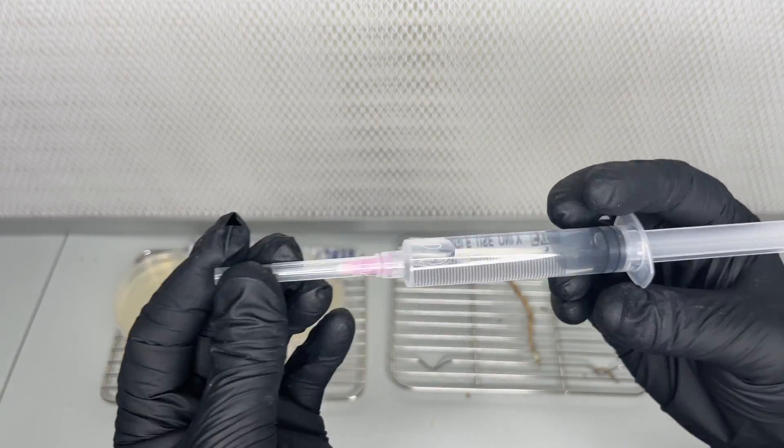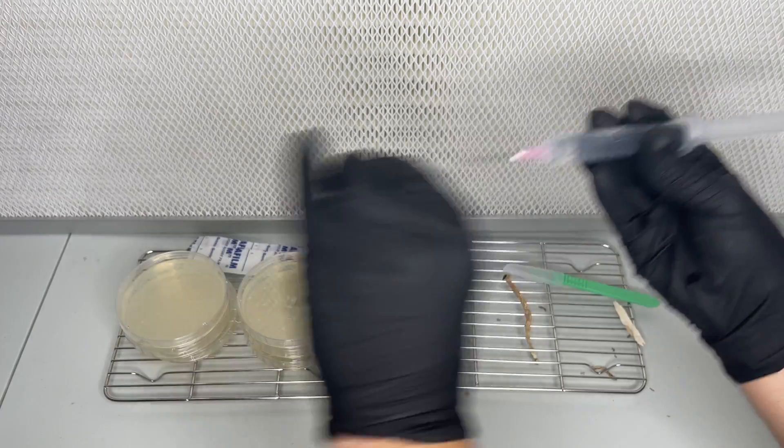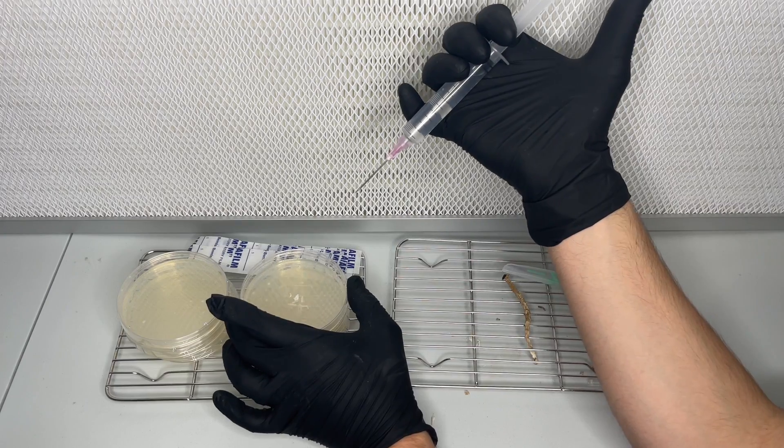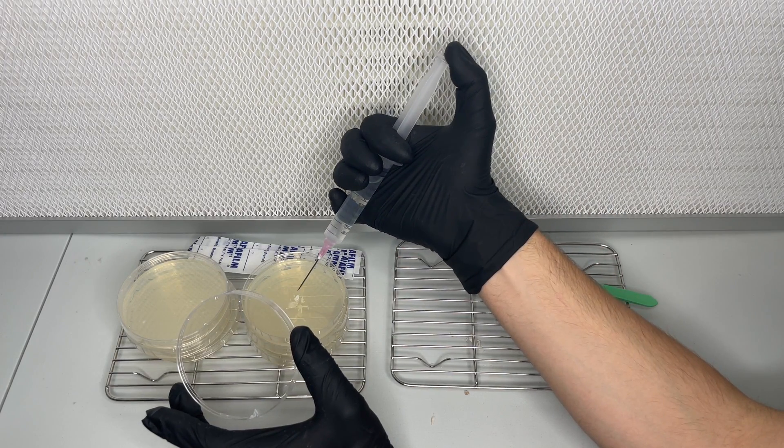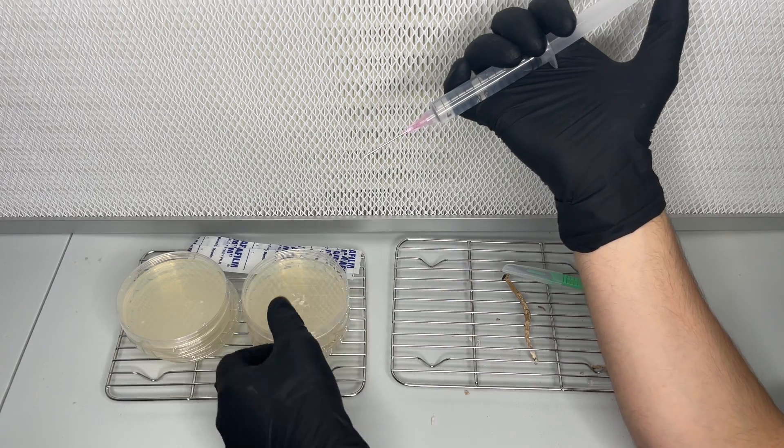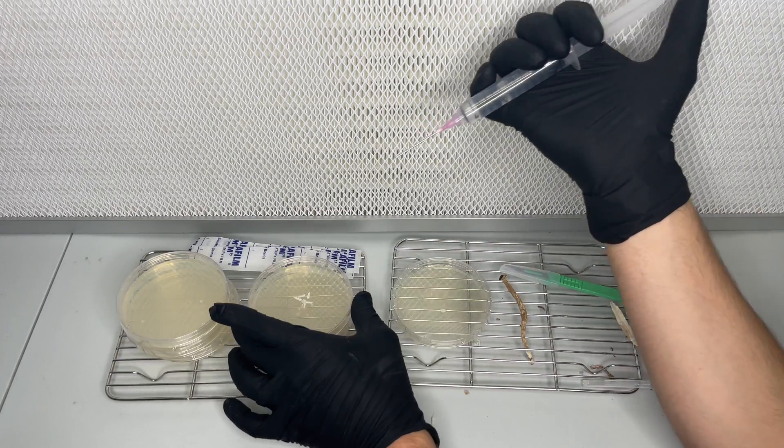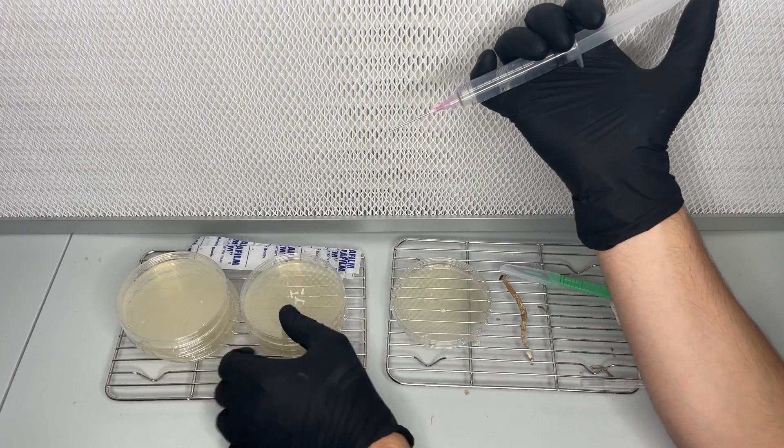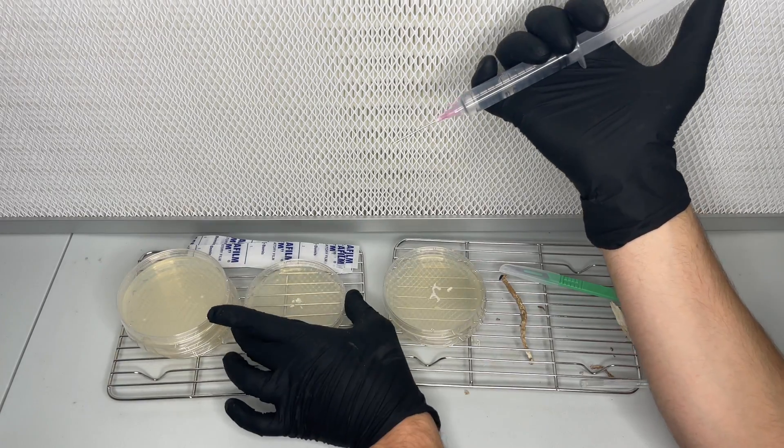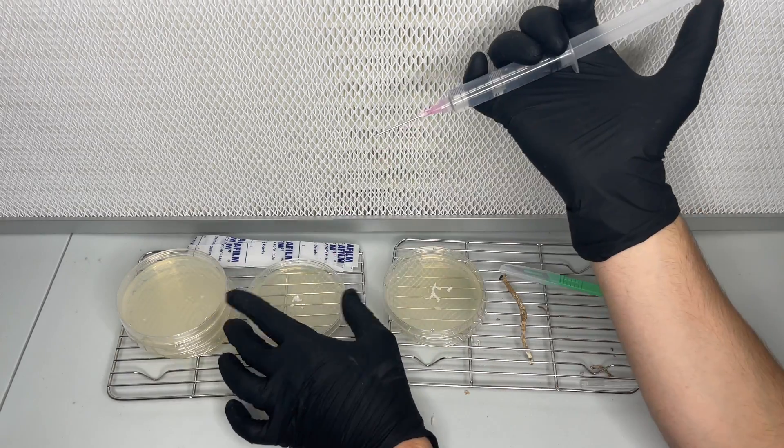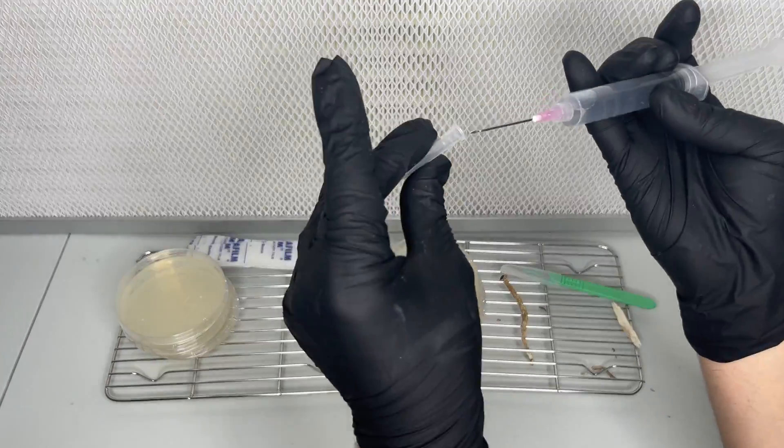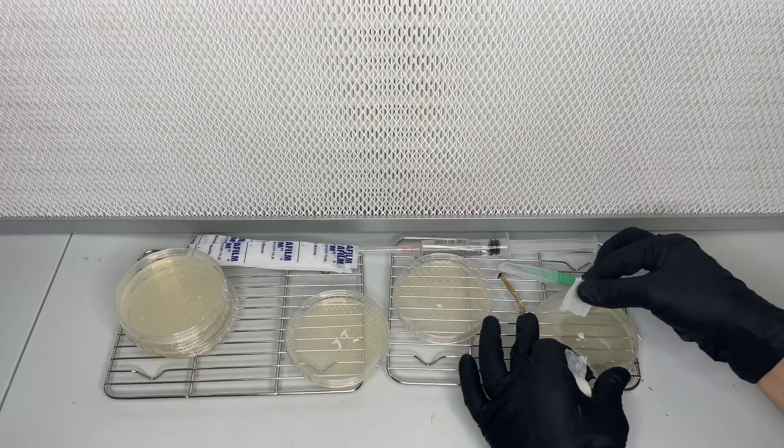After I transferred the tissue to the three agar plates I used some sterile water that I made by boiling water and then sucking it up into the syringe and allowing it to cool down. I added a few drops of sterile water to each agar plate to rehydrate the dried tissue.